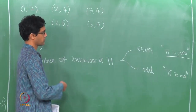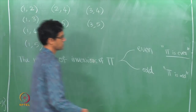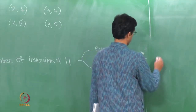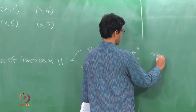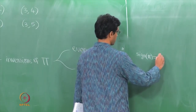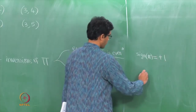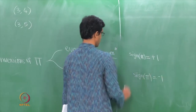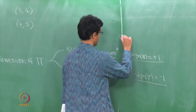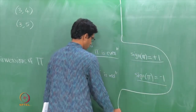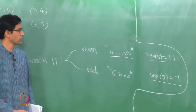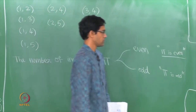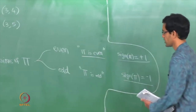We also have the notion of the sign of a permutation, which is another way of expressing the same thing. If pi is an even permutation, we say the sign of pi is +1; if pi is odd, the sign of pi is −1. The advantages of using +1 and −1 will become clearer as we go along.